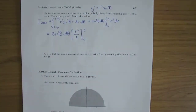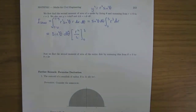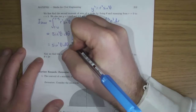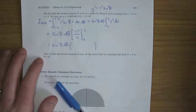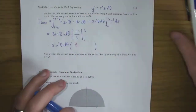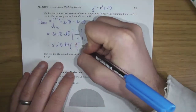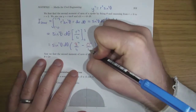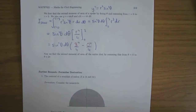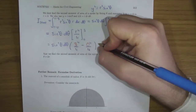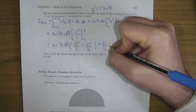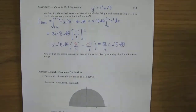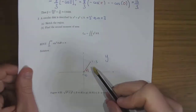Top limit minus bottom limit: three to the four over four minus zero to the four over four. Three to the four is 81, so it's 81 over four. That gives 81/4 times sin squared θ dθ — that's the second moment of area of the spoke.